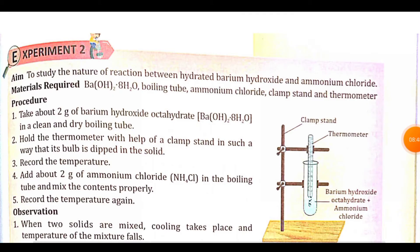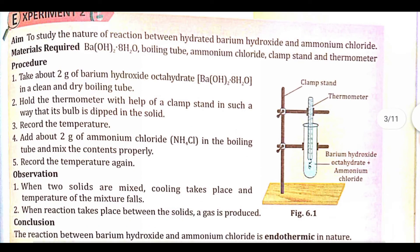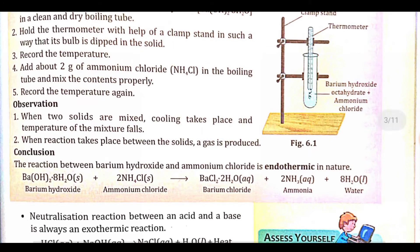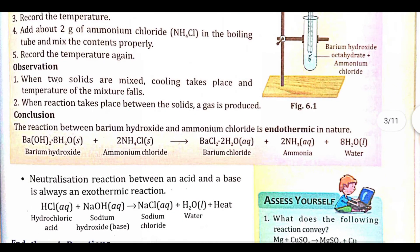Experiment 2 — aim: to study the nature of the reaction between barium hydroxide and ammonium chloride. Materials: Ba(OH)₂·8H₂O, boiling tubes, ammonium chloride, clamp stand, thermometer. Procedure: take 2g barium hydroxide octahydrate in a clean dry boiling tube, hold the thermometer with a clamp, record the temperature, then add 2g ammonium chloride (NH₄Cl) and mix constantly. Record the temperature again — when the two solids are mixed, it will become cold.